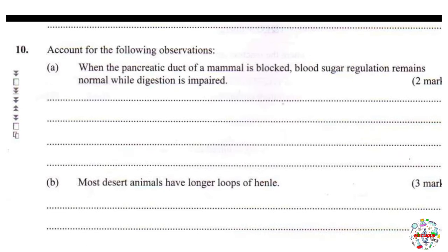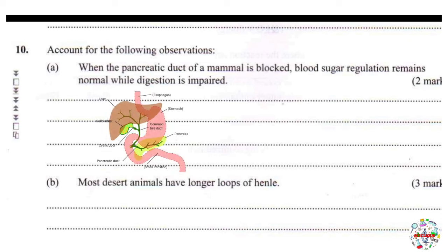Proceeding to question 10, part A: when the pancreatic duct of a mammal is blocked, blood sugar regulation remains normal while digestion is impaired. Both digestion and regulation of blood sugar level are influenced by the pancreas. The pancreas secretes pancreatic juice, which plays a huge role in digestion of food substances in the duodenum. If you block the pancreatic duct — the tube-like structure connecting the pancreas to the duodenum — the pancreatic juice cannot be transported to the duodenum, so digestion is impaired.